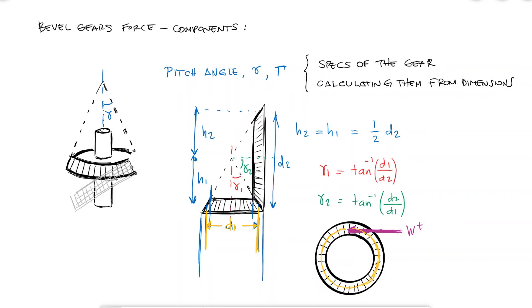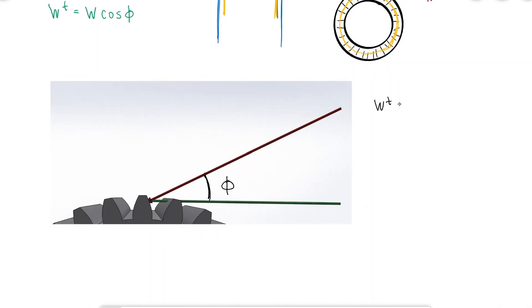For this reason, the tangential component would be the overall vector w times cosine of phi, the pressure angle, and since what we can find is the tangential component, what we actually want is the full vector w in terms of w^t.